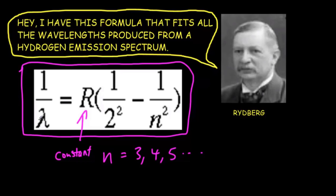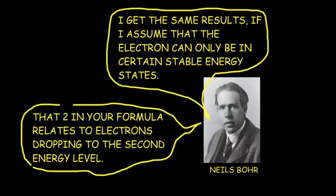It was going to be left to a famous Danish physicist to come up with a model that explains the spectral lines — by the way you don't need to know this formula, I'm just presenting it for historical reasons. The Danish physicist was of course Niels Bohr. In his model there were only certain stable, allowable energy states for the atom — discrete energy states, or we could say the energy states were quantized. He realized that the two in Rydberg's formula represented transitions down to the second energy level. So let's look more deeply into Bohr's model.